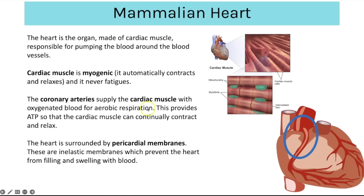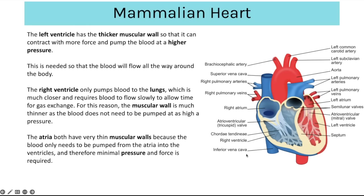The heart has coronary arteries running on the outside, supplying the cardiac muscle with oxygenated blood for aerobic respiration so ATP can be created for continual contraction and relaxation. The heart is surrounded by pericardial membranes, which are inelastic membranes that prevent the heart from filling and swelling with blood. The left ventricle has a thicker muscular wall so it can contract with more force and pump blood at higher pressure, necessary for blood to flow through the aorta to the rest of the body.